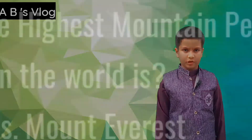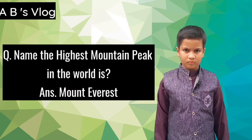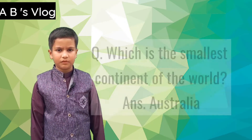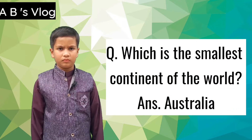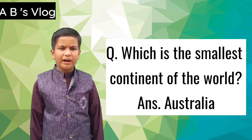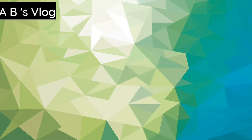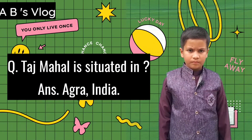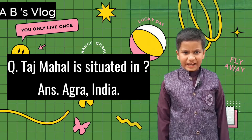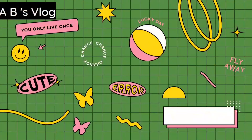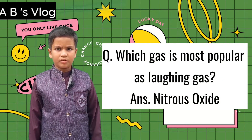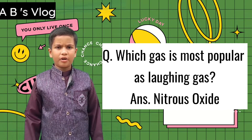Name the highest mountain peak in the world: Mount Everest. Which is the smallest continent of the world? Australia. Taj Mahal is situated in Agra, India. Which gas is most popular as laughing gas? Nitrous oxide.